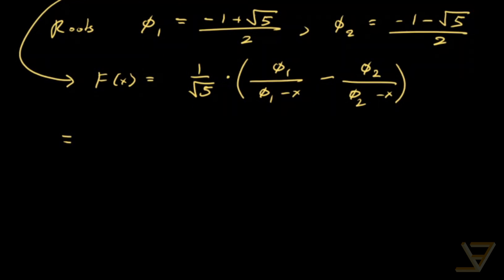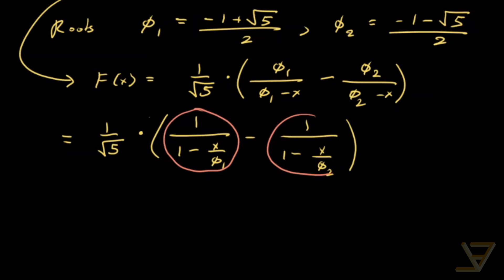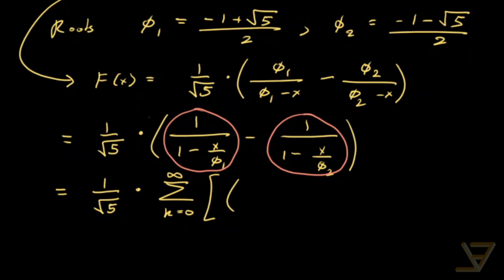We can put this in a slightly different form to make the next step clear. We write this as 1 over (1 minus x/φ₁) minus 1 over (1 minus x/φ₂). If you've ever seen the sum of an infinite geometric series, that's exactly what each term is. So we write this as two infinite geometric series: the sum from k equals 0 through infinity of (x/φ₁)^k minus (x/φ₂)^k.